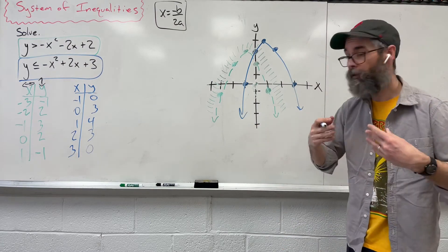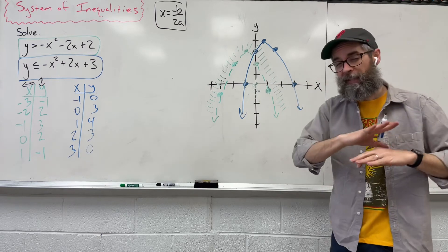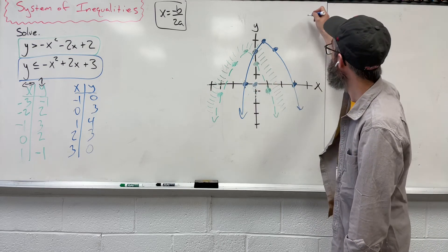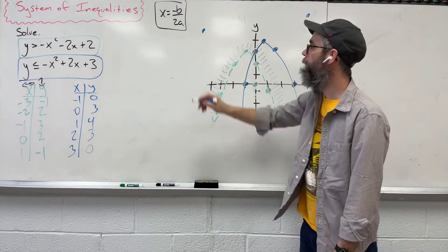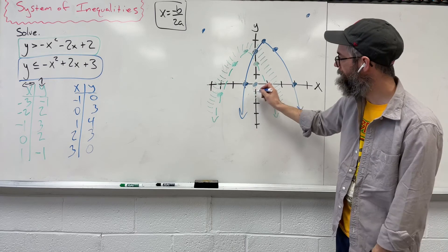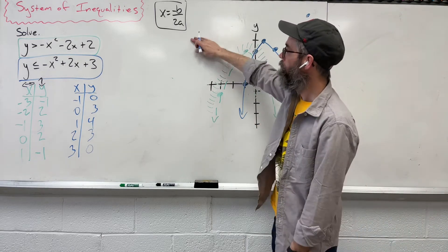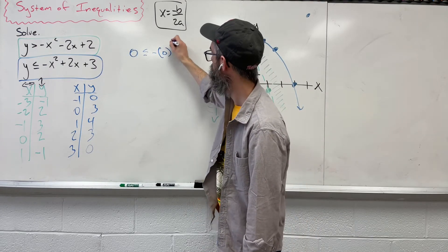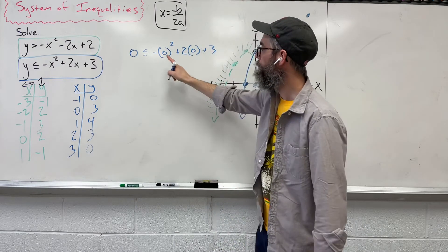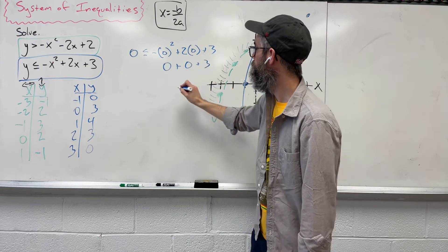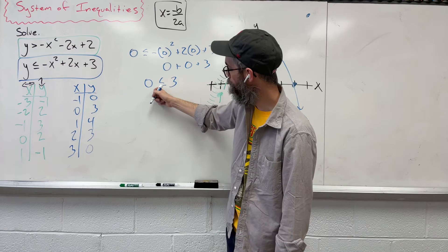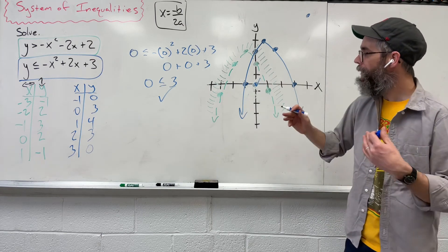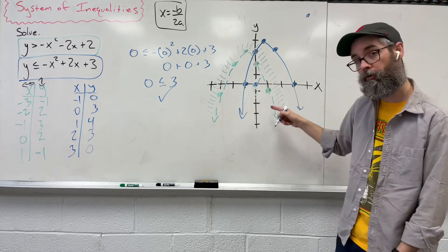All right, now we've got to shade. We've got to pick a point, any point, as long as that point's not on our blue line. So for right now, pretend that green line doesn't even exist. Blue is all we're looking for. So I could pick a coordinate inside, I could pick a coordinate way out here, way out there. It doesn't really matter. Inside, outside. I'm going to go inside. Why? Because it's the 0, 0 that I like. So let's take that and substitute that in. Is 0 less than or equal to negative 0 squared plus 2 times 0 plus 3, giving us 0, 0, and 3? Is 0 smaller than 3? Yes, that statement makes sense. So that means this statement makes sense.